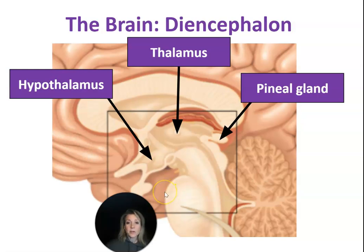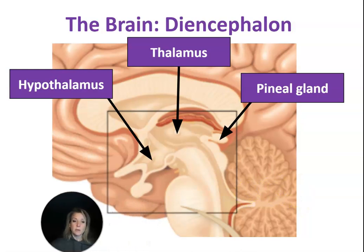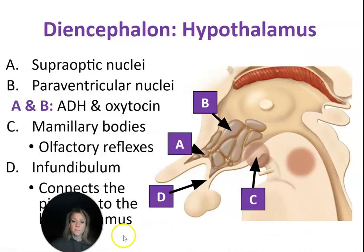The next part we're going to talk about is the hypothalamus. The prefix hypo means below, so the hypothalamus would be below the thalamus, and that's what we see in the picture.